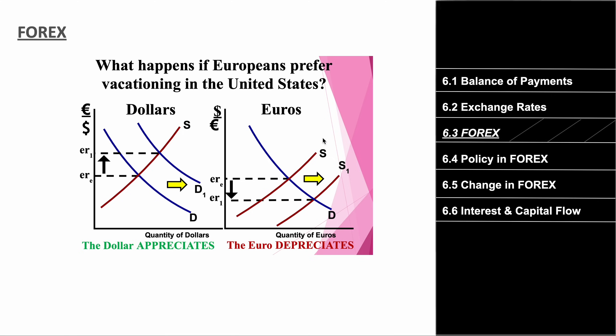If the dollar appreciates and becomes more valuable, the euro becomes less valuable — that's because in a floating exchange rate, one currency rising means the other falls. So instead of one dollar for two euros, it might become one dollar for one euro, meaning the euro depreciates. Both currencies cannot appreciate simultaneously, and both cannot depreciate simultaneously. If the dollar appreciates, demand for dollars increases and euro supply increases.